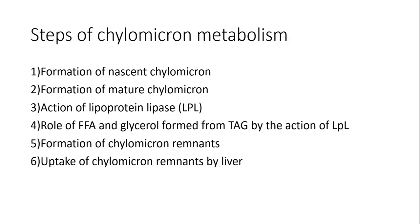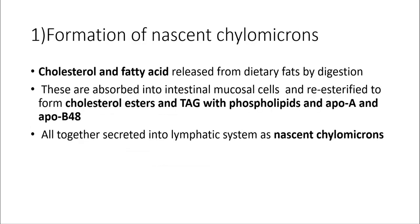There are 6 steps in chylomicron metabolism: formation of nascent chylomicron, formation of mature chylomicron, action of lipoprotein lipase, role of free fatty acid and glycerol formed from triacylglycerol by the action of LPL, formation of chylomicron remnants, and finally uptake of chylomicron remnants by liver. Chylomicron is a lipoprotein used for the transport of lipids.